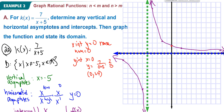The graph doesn't have to be exactly perfect. That covers the vertical asymptote, horizontal asymptote, intercepts, and graph of the function, along with the domain we stated at the start. You can also check this on your graphing calculator to validate the result.